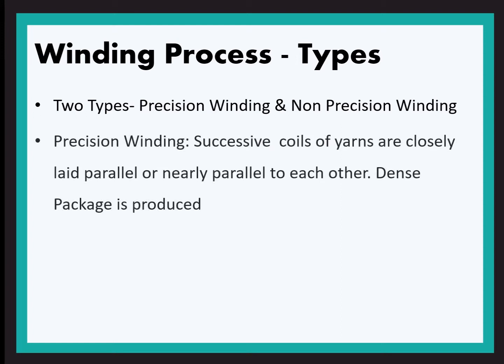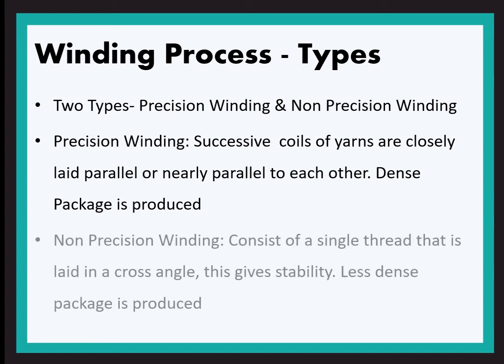In precision winding, many coils of yarn are wound parallel or closely parallel to each other. The tension of yarn is comparatively high and a compact and dense package is produced. Flanged bobbins are used in this process. The drive is directly given to the spindle on which the package is mounted.